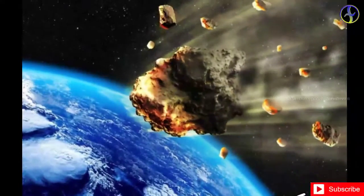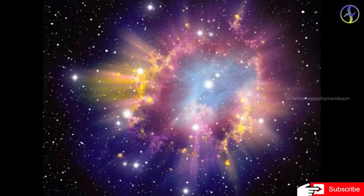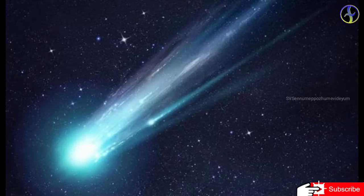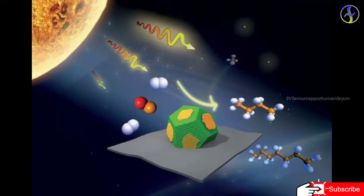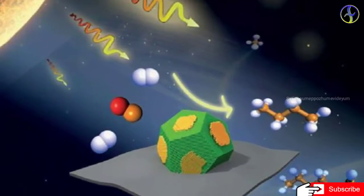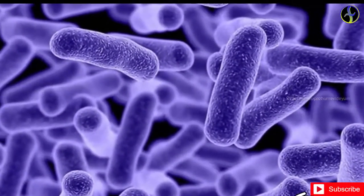Panspermia suggests that life exists throughout the universe. Space dust, meteorites, asteroids, comets, and planetesimals are things that exist in our world. If we want to understand how life came to exist on Earth, we need to explore these possibilities.